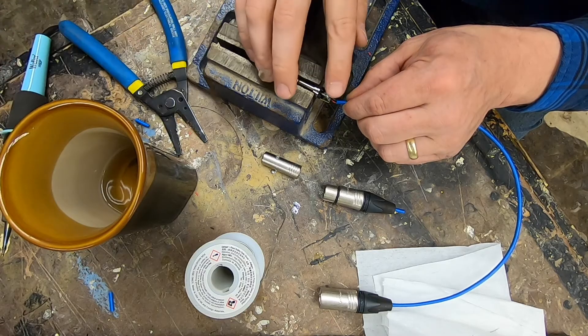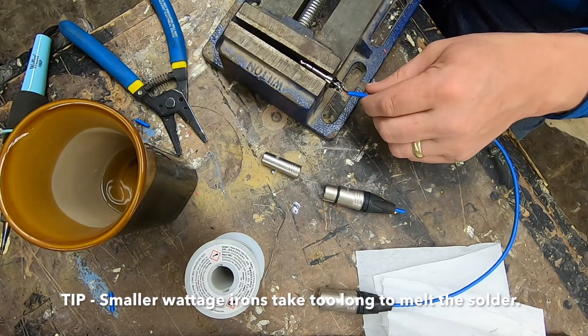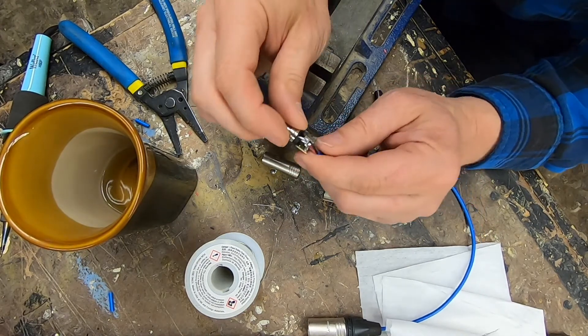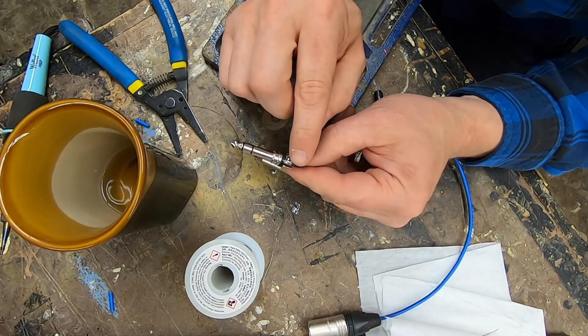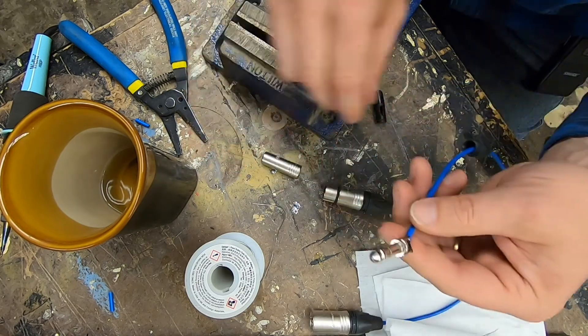The nice thing about the 700 degree iron, it gets in, heats it up very quickly, and then it gets out. And you can see how that insulation started to melt back. And then I just pulled it forward because it's very pliable.